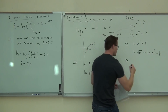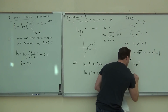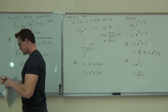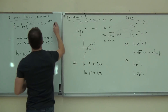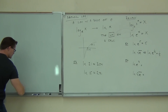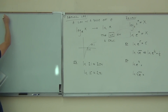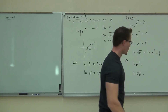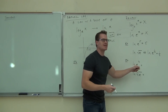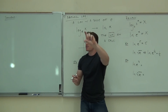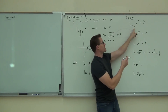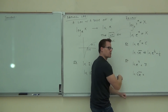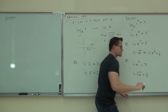Try a couple on your own. LN of E to the seventh — bases are the same, you get 7. LN of the fourth root of E — rewrite as LN of E to the one-fourth — you get one-fourth. Whenever your bases are the same, you just get the value of the exponent because LN and E to the power cancel each other out.